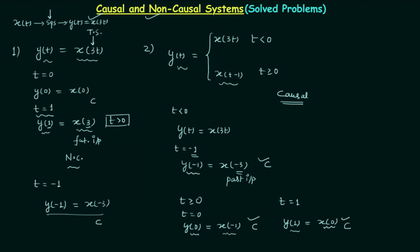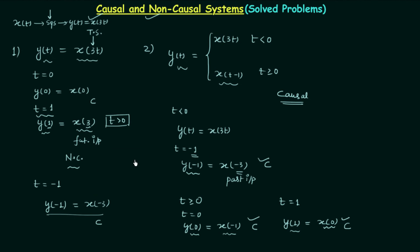But in the second problem, when t is greater than or equal to 0, the output y(t) is not x(3t) — it is x(t-1). This is why the second system is causal. So check for all the different possibilities, otherwise you will miss some point and your answer will not be correct.